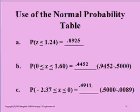These are the numbers that you should have gotten. The first one just comes from the value on the table for the z value of 1.24. The second one comes from taking the value for 1.6 and subtracting the value of 0.